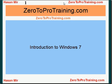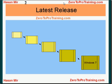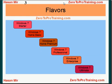Windows 7 is the latest release of Microsoft Windows. Windows 7 comes in various flavors, namely: Starter, Home Basic, Home Premium, Professional, Enterprise, and Ultimate.